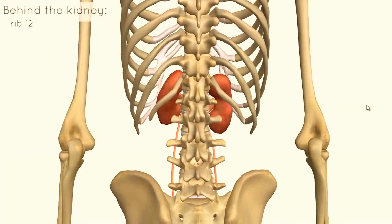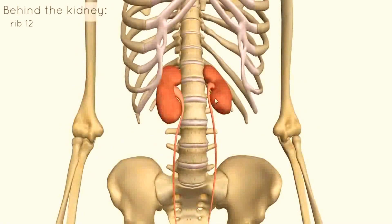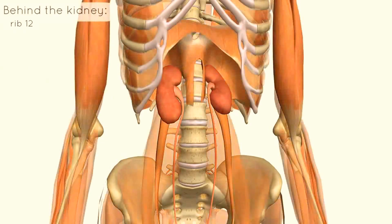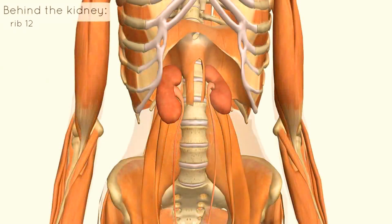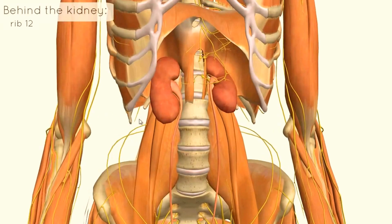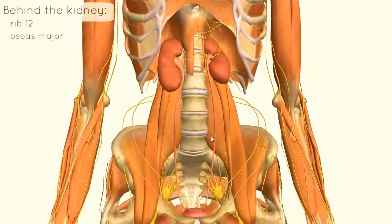If I bring in some other structures like some of the musculature, we can see some of the muscles which sit behind the kidney. You can see the psoas major on either side sits behind it.